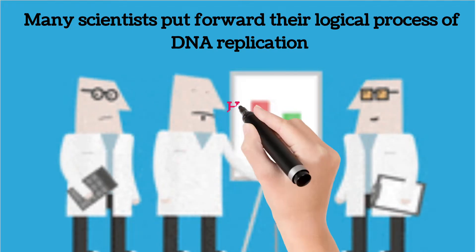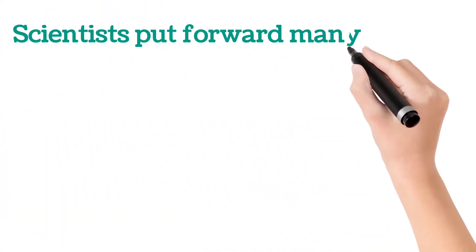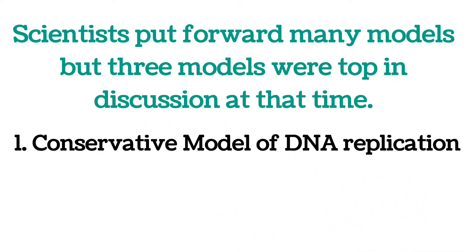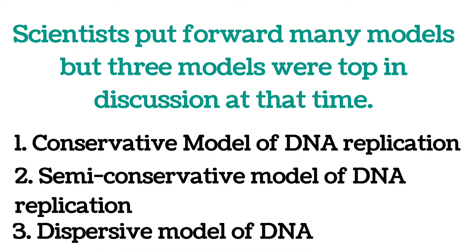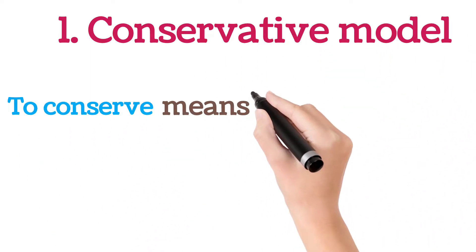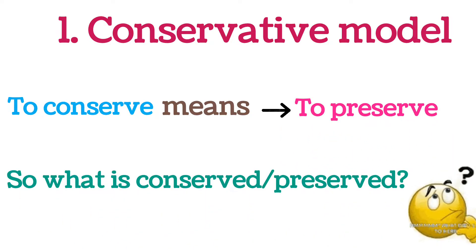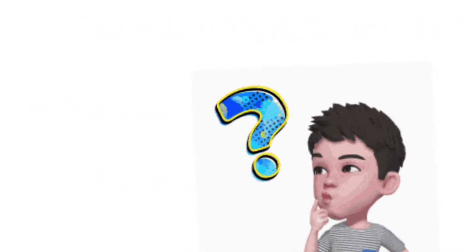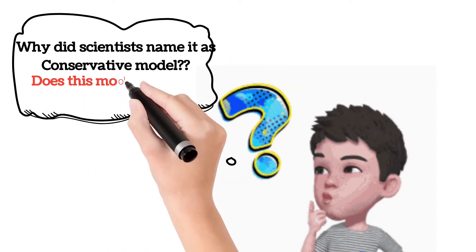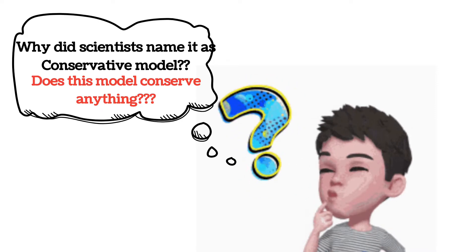Watson and Crick discovered the double helical structure of DNA, and after this discovery everyone was thinking about the replication process. Many scientists started working on it and tried to find the correct process. It was a big question for all — how does DNA, which has a double helical structure, get replicated? Scientists put forward their logical hypothetical models of DNA replication.